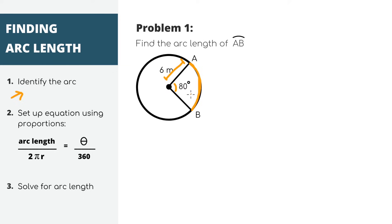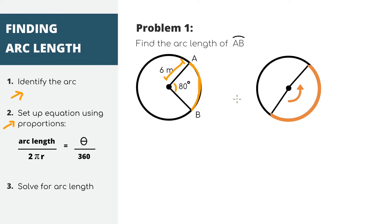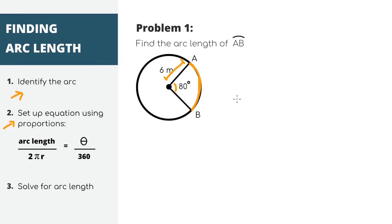Our second step is to come up with an equation to solve for arc length. There is a formula for arc length, but instead of just memorizing it, let's think through it, because there are too many formulas out there for us to memorize them all. The length of the arc is proportional to how big or small this angle is — the bigger the angle, the bigger the arc length, and the smaller the angle, the smaller the arc length. This is exactly how the formula works; it's just a proportion.